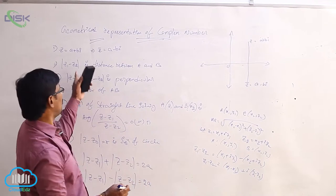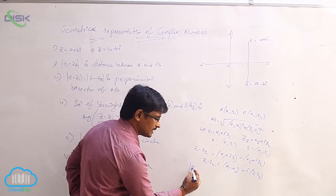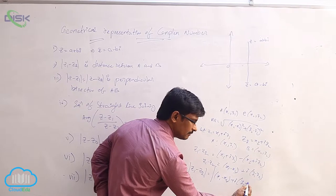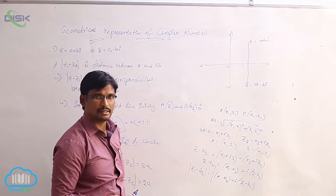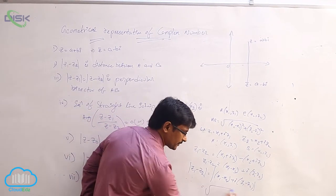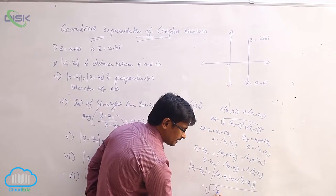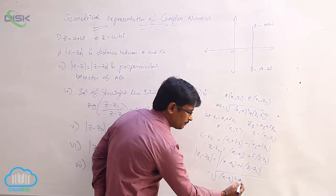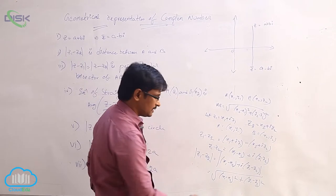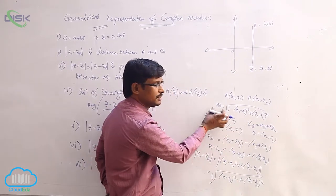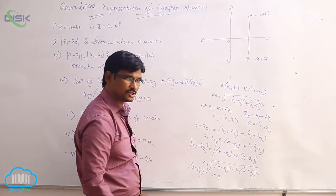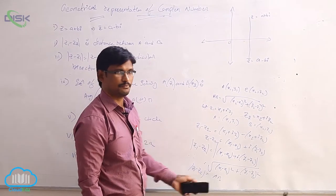The modulus mod(z1 minus z2) equals the modulus of (x1 minus x2) plus i(y1 minus y2). We know that mod(x plus iy) equals the square root of x squared plus y squared, so mod(z1 minus z2) equals the square root of (x1 minus x2) squared plus (y1 minus y2) squared. This is exactly the distance formula AB. So mod(z1 minus z2) is the representation of the distance between the two points A and B.